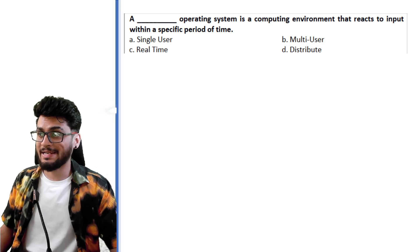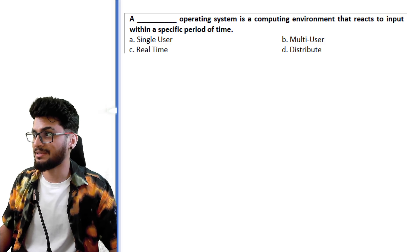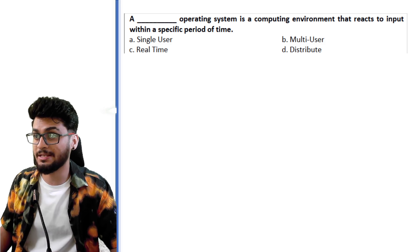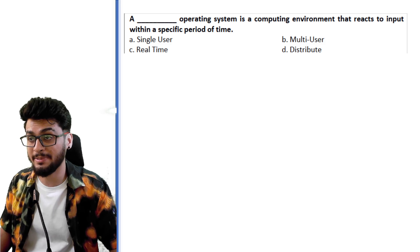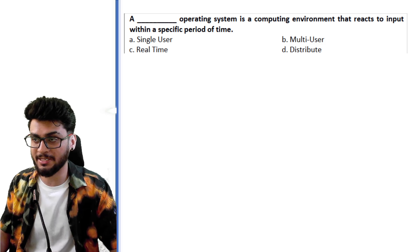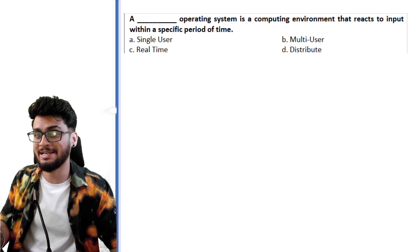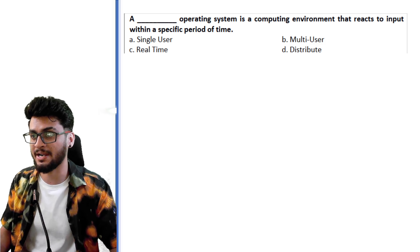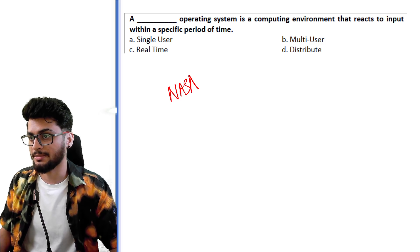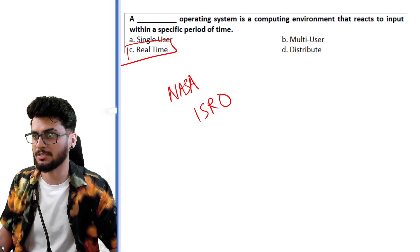'A dash operating system is a computing environment that reacts to input within a specific period of time.' You are giving a time limit to your operating system to reply. NASA and ISRO use these kinds of operating systems. So real-time is the right answer.